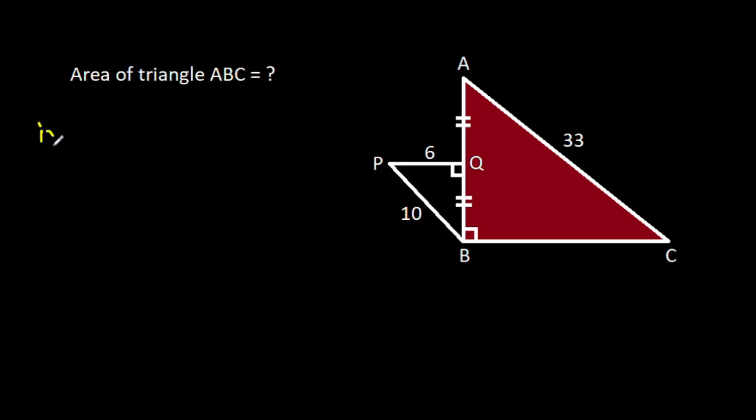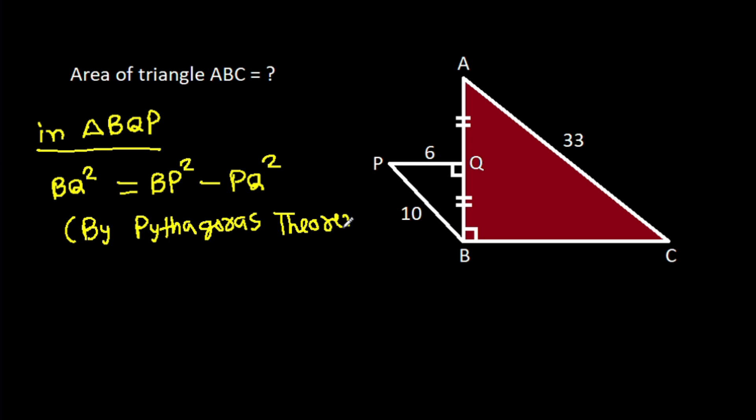In triangle BQP, BQ² will be BP² minus PQ² by Pythagoras theorem. BQ² is 10² minus 6², and BQ² is 100 minus 36, that will be 64.